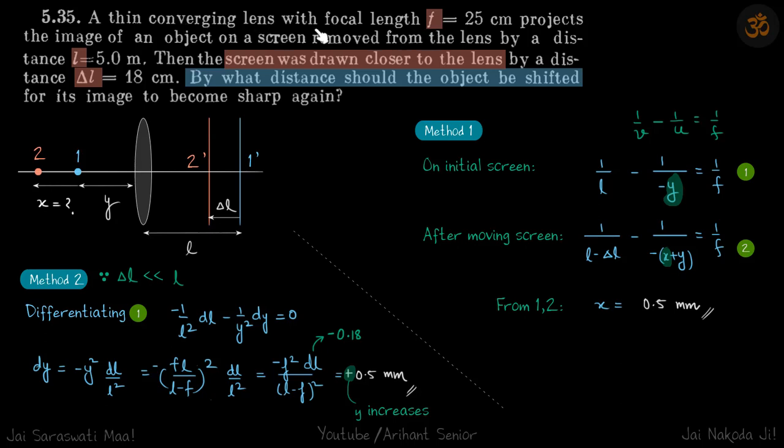A thin converging lens with focal length f projects the image on a screen which is at a distance from the lens by distance l. Then the screen was drawn closer to the lens. So let's say the object was here and its image was formed at this one dash, which is at a distance l. Then the screen was brought closer to the lens.